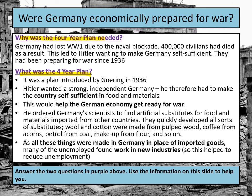So, first of all, why was the Four-Year Plan needed? Germany had lost the First World War because of the naval blockade, where British ships had stopped food getting into Germany as a way of starving them out. It was horrendous, but it did work — 400,000 German civilians died as a result, from starvation or diseases linked to malnutrition. Therefore, Hitler wanted to make sure that Germany was self-sufficient.